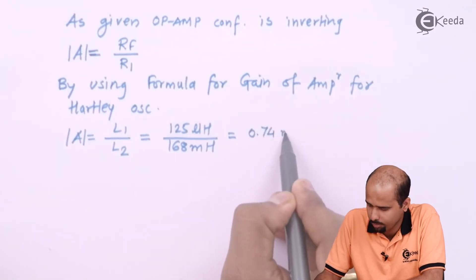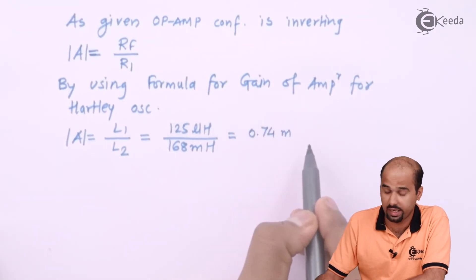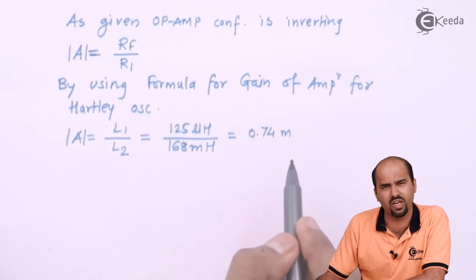0.74 milli is the gain for that particular oscillation, it is a very, very less value.